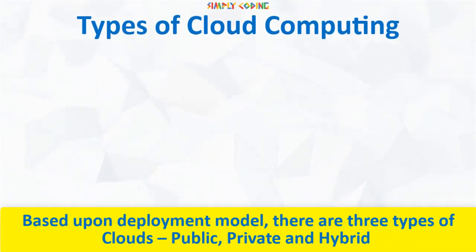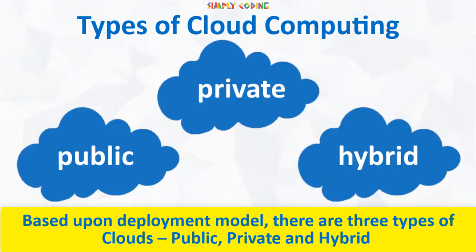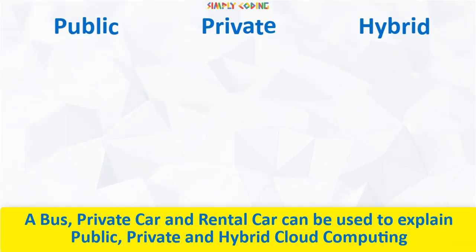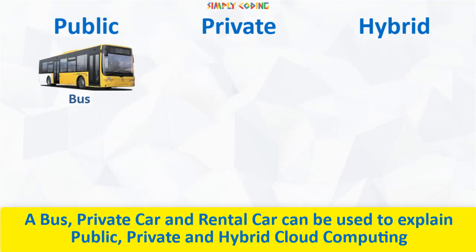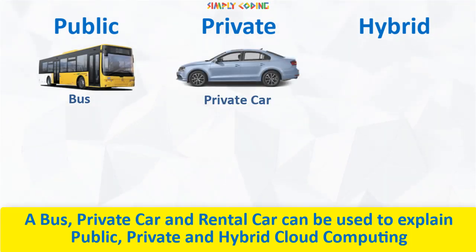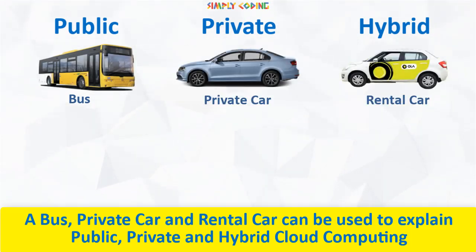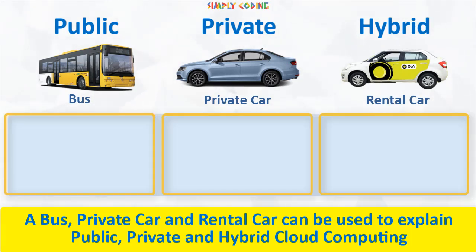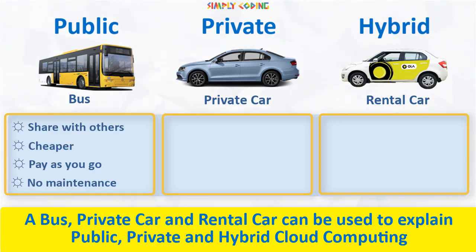Based upon deployment model, cloud services can be leveraged in three different ways: public, private, and hybrid. To understand the difference amongst them, let's take an example. Suppose you need to travel. A bus, private car, and rental car can be used to explain public, private, and hybrid cloud computing. A bus is a public transport, which is widely available, but you need to share it with others. It is cheaper, and you only pay for the distance you travel.